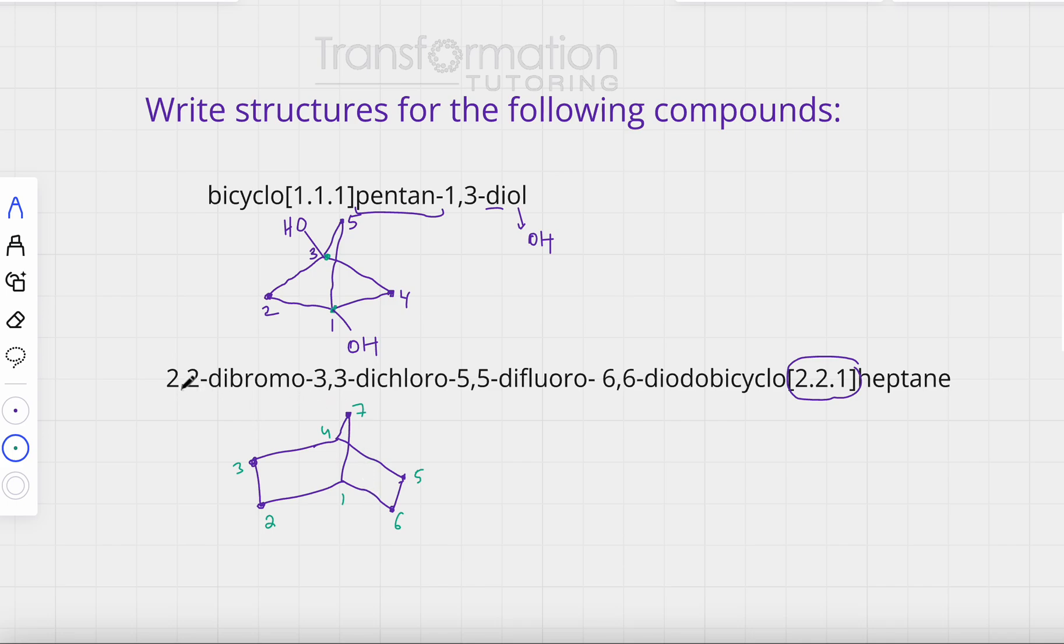Next I'm going to attach my substituents. It says 2,2-dibromo, which means there are two bromine groups on carbon number two - one bromine and another bromine. 3,3-dichloro means two chlorines on the third carbon - one chlorine and another chlorine.